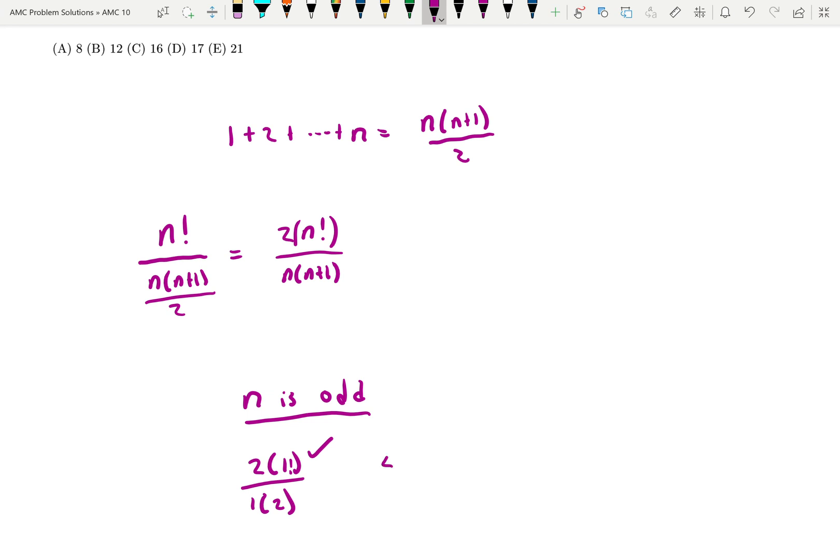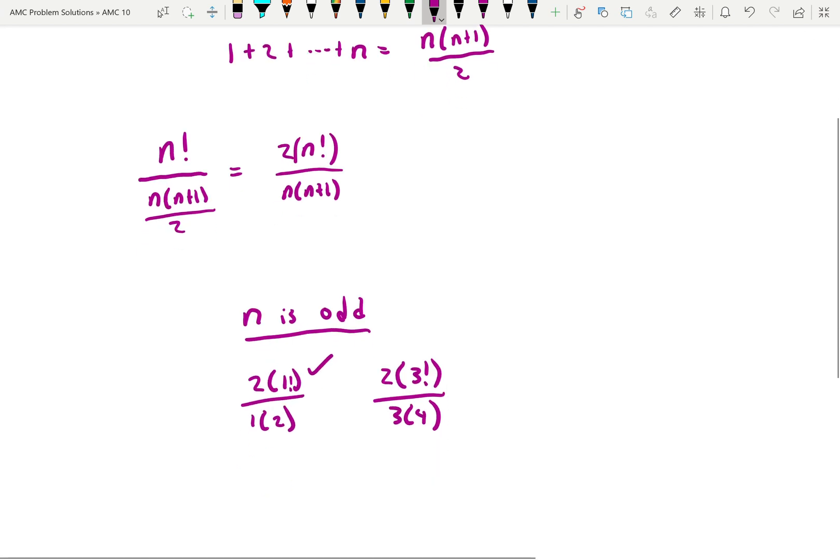What about when n is 3? 2 times 3 factorial over 3 times 4. That is also, that's going to be 12 over 12. So that works.